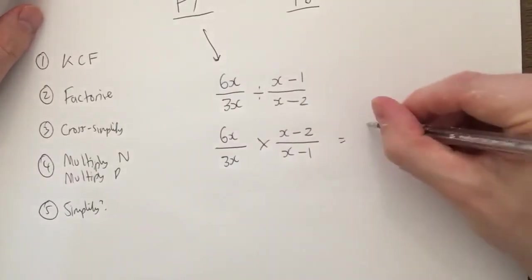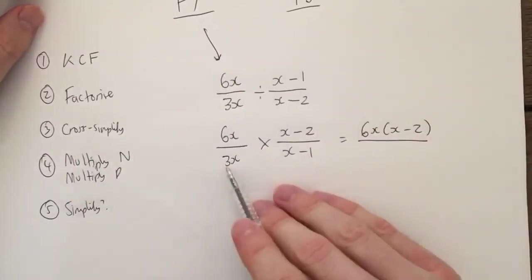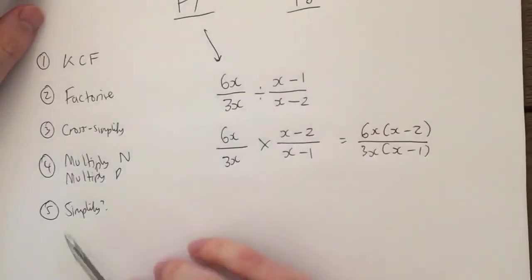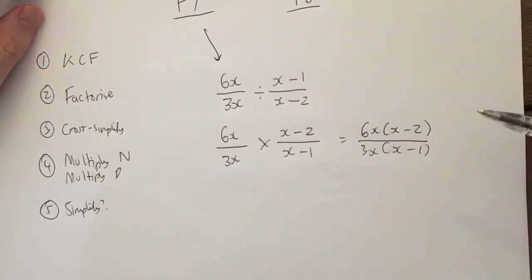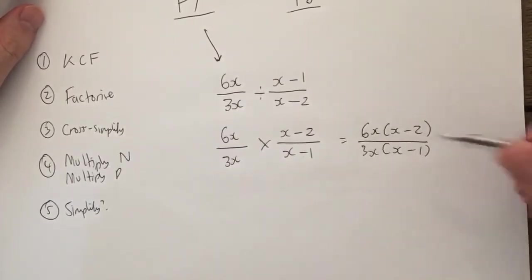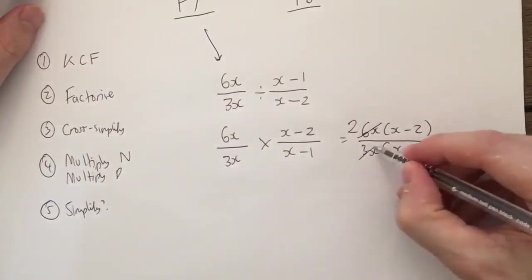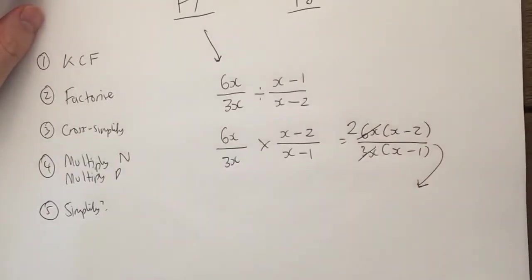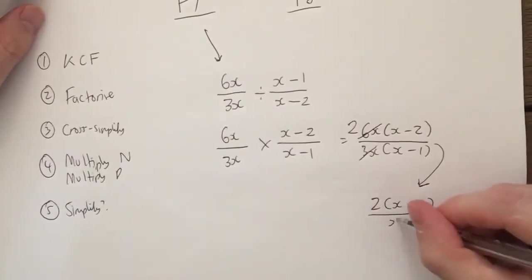So therefore I multiply the numerator: 6x times that, I'm not going to expand it, okay, it's 6x bracket x minus 2. Over multiply the denominator: 3x times that is 3x bracket x minus 1. Right, now I think, can I simplify at the end? 6x and 3x, they both go into 3x, so I can divide this by 3x and divide this by 3x. If I divide this by 3x, 6x divided by 3x is just 2. 3x divided by 3x is 1. Again I don't need to put it there because it doesn't affect what's happening with the rest of the denominator. So my final answer would be 2 bracket x minus 2 over x minus 1. Final answer.